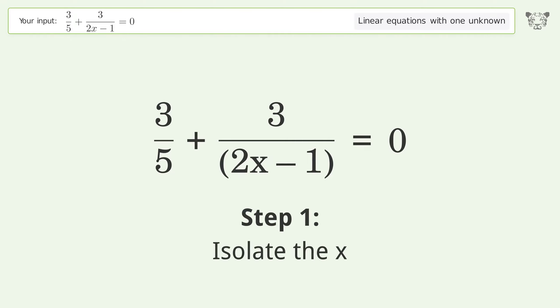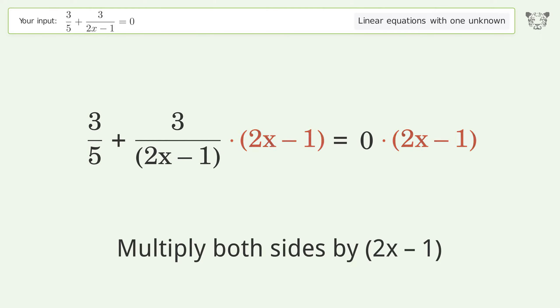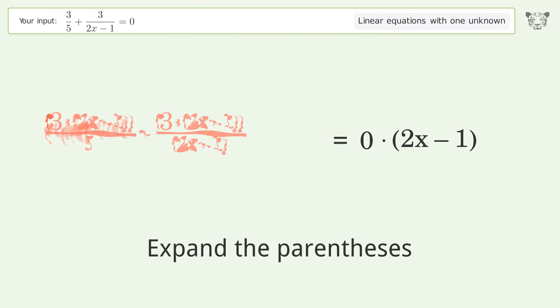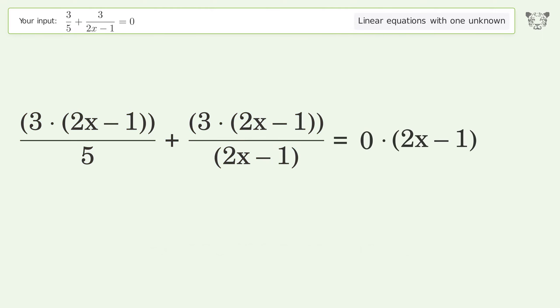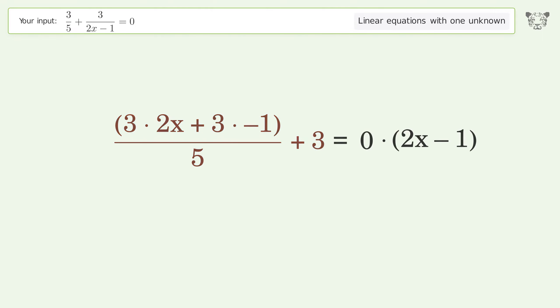Isolate the x. Multiply both sides by 2x negative 1. Expand the parentheses. Multiply the coefficients, simplify the arithmetic.